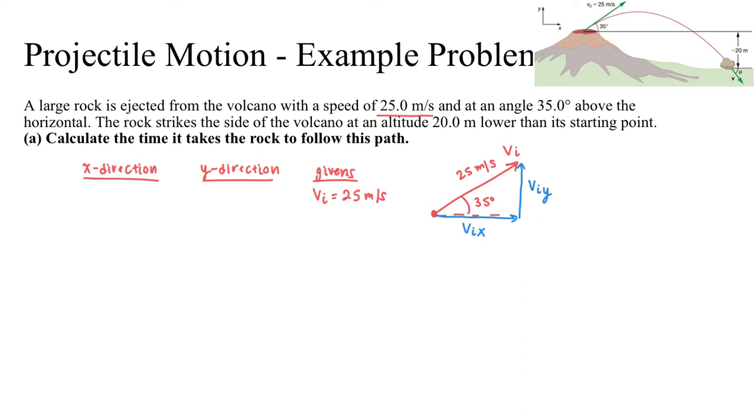So because I'm given the angle right here, I know that cosine of 35 degrees will be my x component divided by 25 meters per second, meaning that my initial velocity in the x direction will be 25 cosine 35 degrees. And then by the same logic, my initial velocity in the y direction will be 25 sine 35 degrees.